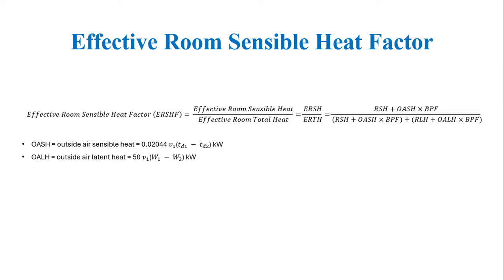The next factor is the Effective Room Sensible Heat Factor, ERSHF. The ratio is effective room sensible heat divided by effective room total heat (ERSH / ERTH). To calculate the effective room values, we multiply by the bypass factor: ERSH = (RSH + OASH) × bypass factor, and ERLH = (RLH + OLH) × bypass factor. The same outside air sensible and latent heat formulas from the previous case apply here.